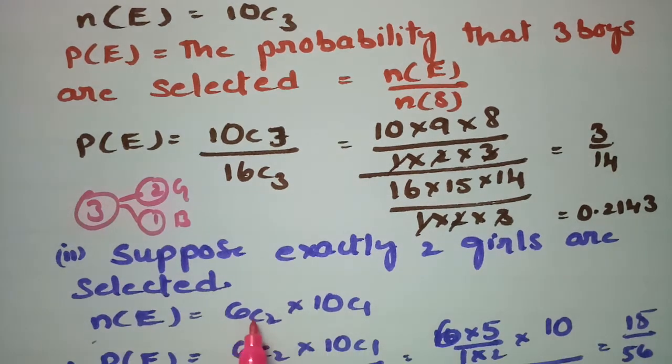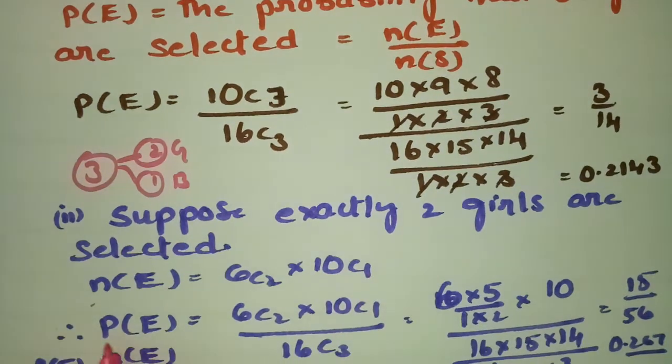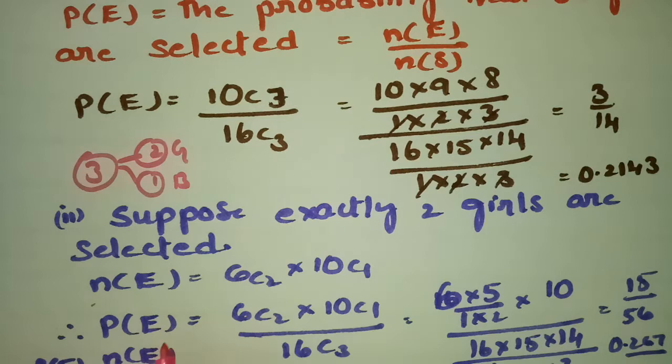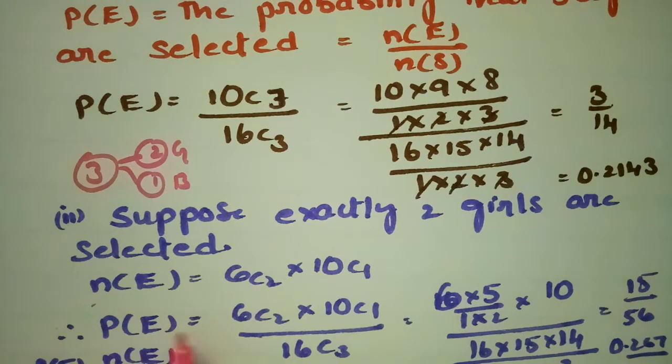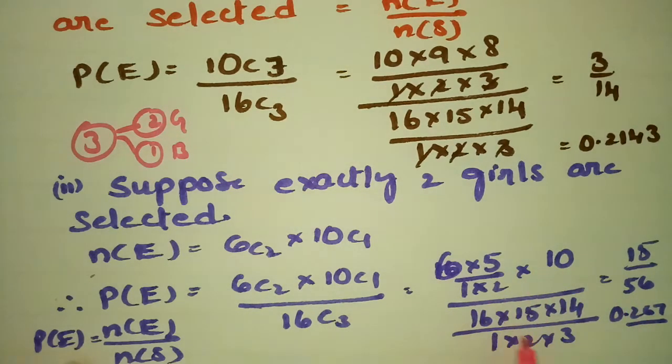Then n(E) equals out of 6 girls, 2 are selected, that is 6C2, and out of 10 boys, 1 boy is selected, that is 10C1. Therefore, the probability of selecting exactly 2 girls is 6C2 × 10C1 by total 16C3.